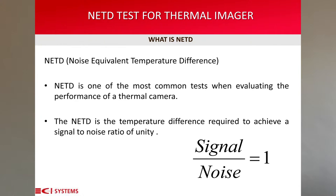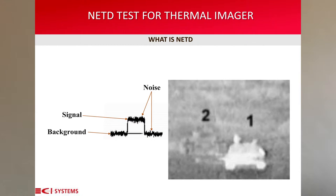From a practical point of view, the NETD is the minimum signal that can be recognized by the system, or where the SNR equals 1. In the image, there are two tanks. The first tank's thermal signature is just above the NETD and is visible to the thermal camera. The second tank is just below the NETD. Even though there is an outline, notice that the second tank and the background noise are at the same gray level.